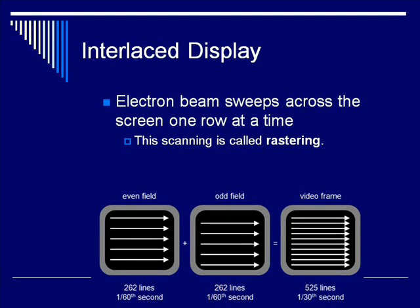The electron beam can sweep across the screen in more than one way. The most common way is called an interlaced display. In this way, the electron beam sweeps across the screen one row at a time. This scanning across the screen a row at a time is called rastering.